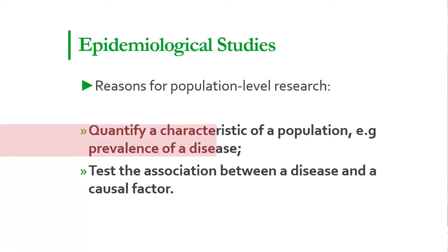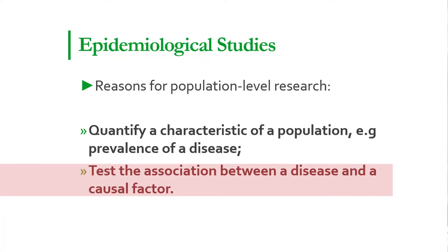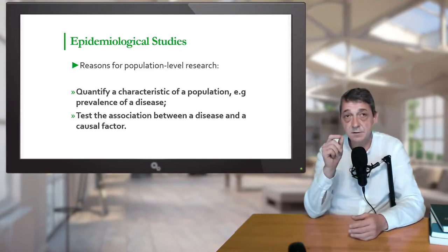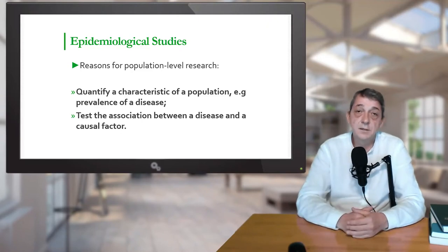The first reason is to quantify the characteristics of that population — for example, the prevalence of a disease. This type of research is known as descriptive research and it is often conducted using surveys. Secondly, the interest of the study might be testing the association between a disease and exposure to a suspected causal factor. The main focus of such research is to test a hypothesis — whether some risk factor is connected with disease occurrence or not. This type of research is called analytical research.